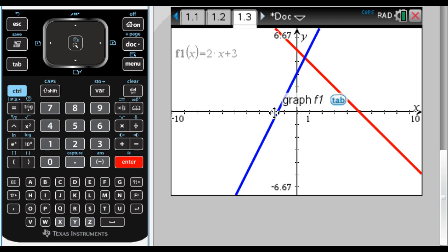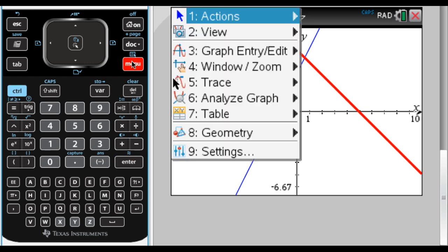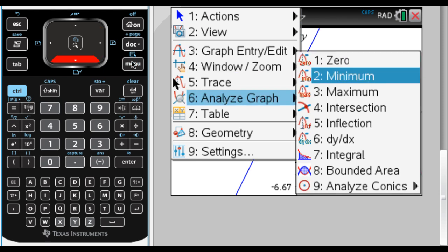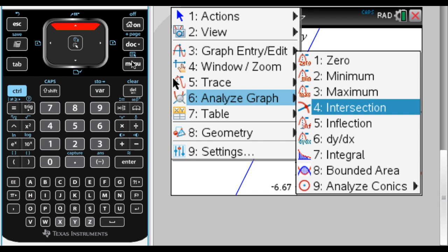A very common thing to do is to find where these graphs intersect. So I'm going to press Menu. There's two ways to do this, one of which is actually way better. I could go down here to analyze the graph. And look at this, you see Intersection. So I'm going to pick Intersection.